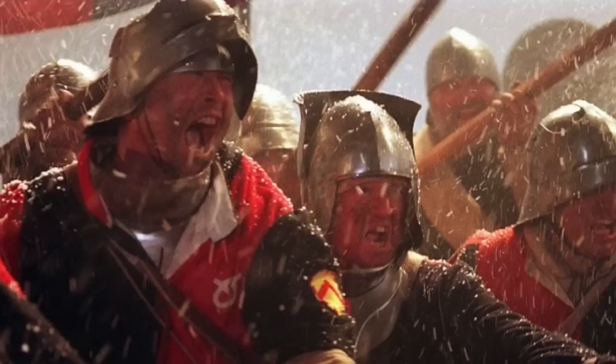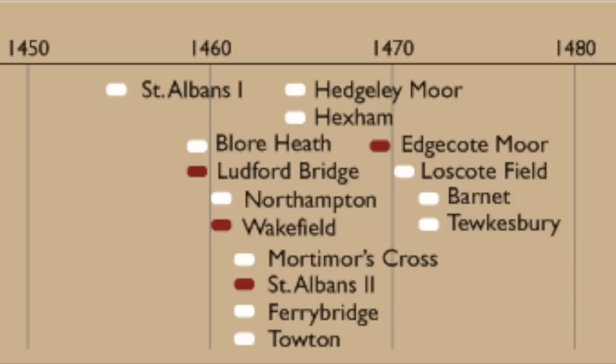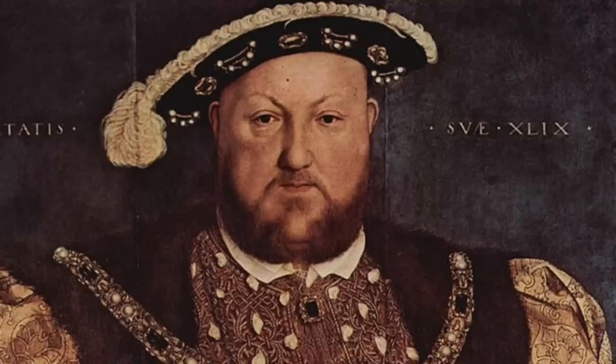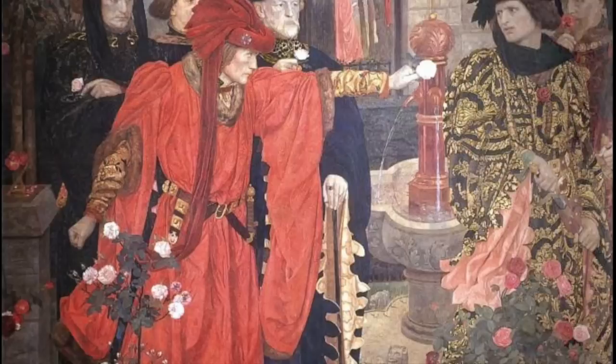The Wars of the Roses were a series of bloody battles that engulfed England between 1455 and 1485. Fought between the royal houses of York and Lancaster, the wars represent a dynastic struggle that saw the English throne change hands no fewer than six times. The civil war resulted in the deaths of tens of thousands of men and ultimately brought about the rise of the Tudor dynasty.